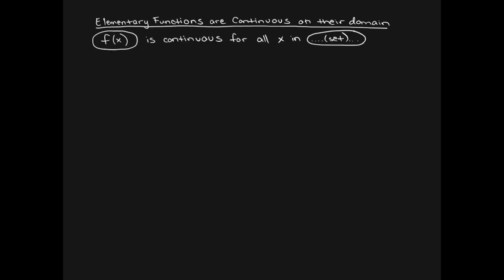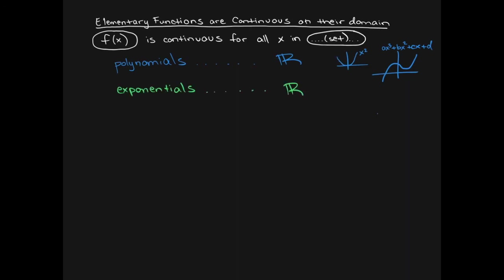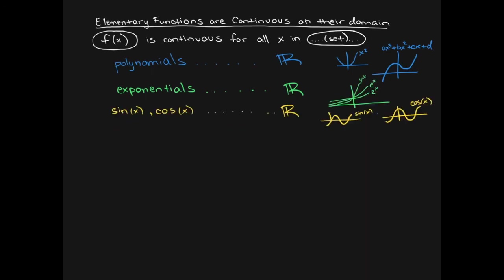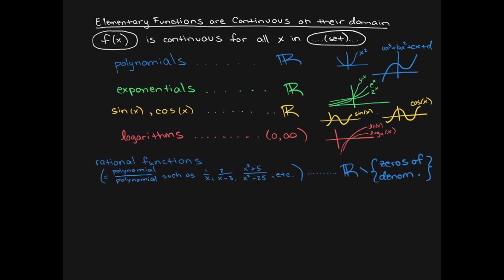Here are continuity properties to know going forward. Polynomials are continuous for all real numbers — smooth functions with no holes, jumps, or asymptotes. Exponential functions are also continuous on all real numbers. Sines and cosines are continuous on all real numbers. Logarithms are continuous on their domain, which is x greater than zero.